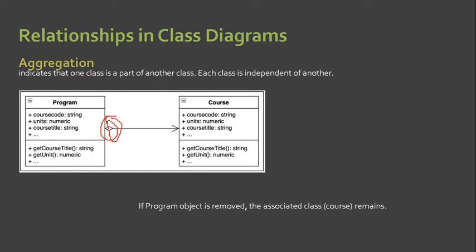However, unlike composition, if the containing class — which is the Program — is removed, the contained class — the Course — remains. So if the containing class is removed, for example if the program is removed, the contained class will still remain. The course remains even if the program to which it belongs is removed from the curriculum.